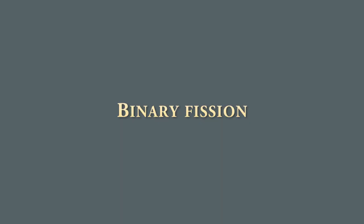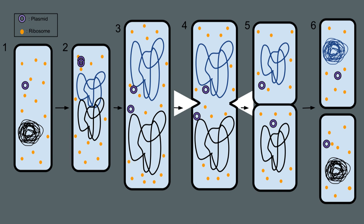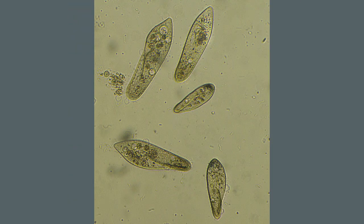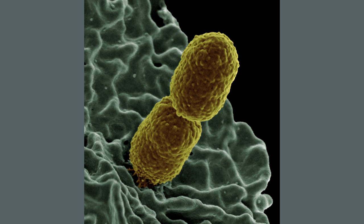Binary fission is a method of asexual reproduction that involves splitting of the parent cell into two daughter cells. It is the most common form of reproduction in prokaryotes and also occurs in single-celled eukaryotes. Examples include amoeba, paramecium, and bacteria.